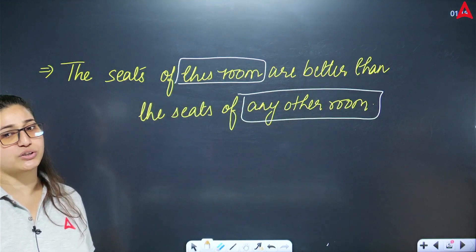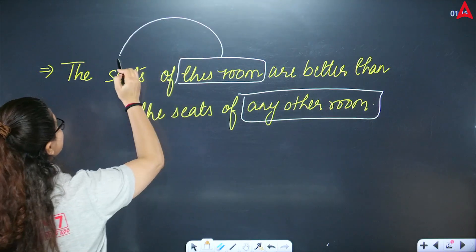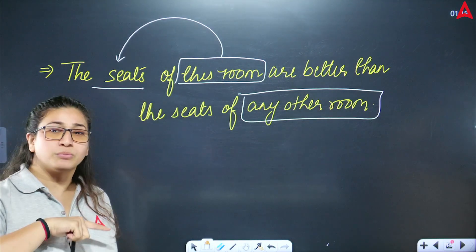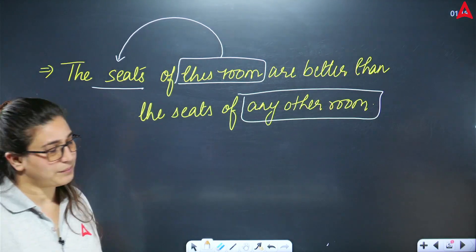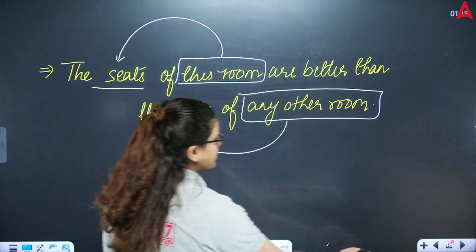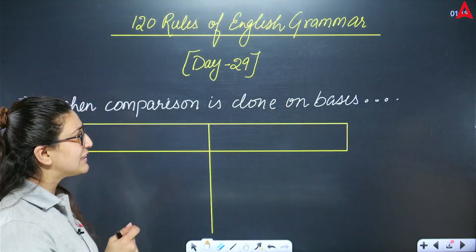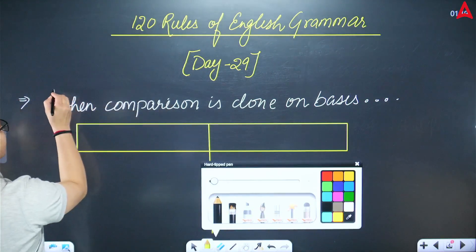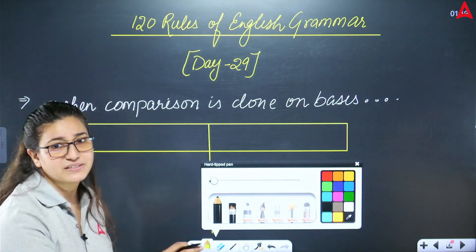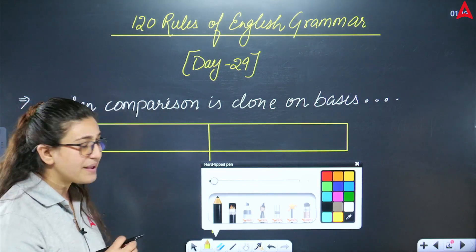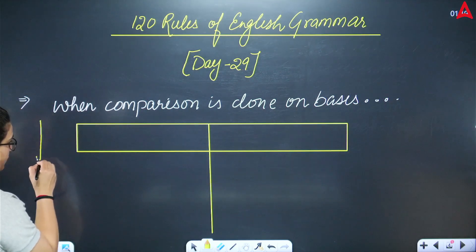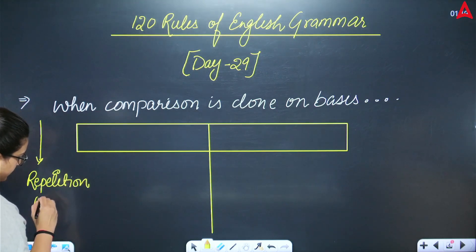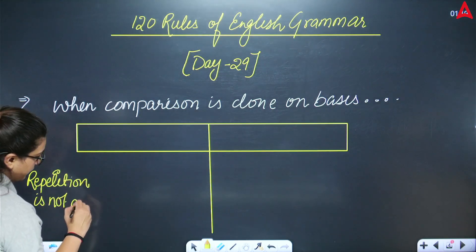You have compared this room to other rooms, but to make this comparison, what is the basis? The key statement is: when comparison is done on a basis, repetition is not allowed. So keep in mind — repetition is not allowed.